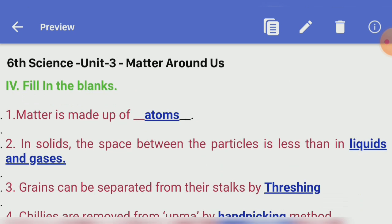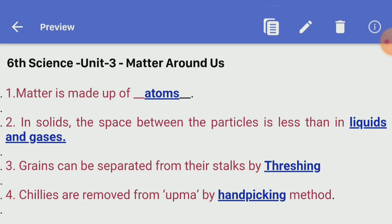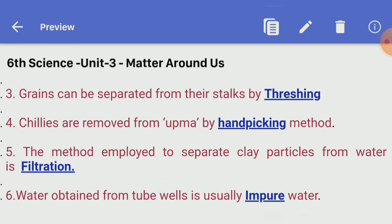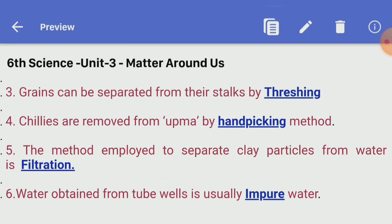Fill in the blanks. First one: matter is made up of dash. Answer — atoms. Second one: in solids the space between the particles is less than in dash. Answer — liquids and gases. Third one: grains can be separated from the ear stocks by dash. Answer — threshing. Fourth one: chilies are removed from upma by dash method. Answer — hand picking. Fifth one: the method employed to separate clay particles from water is dash. Answer — filtration.